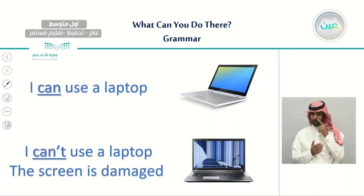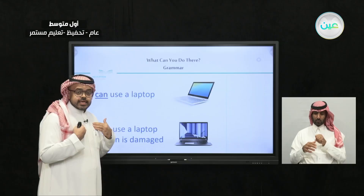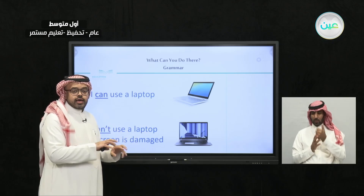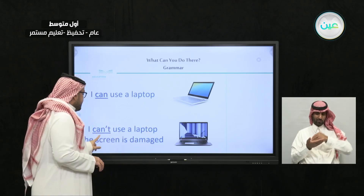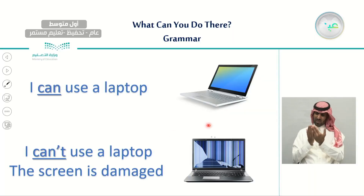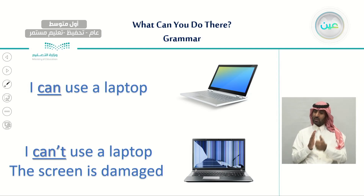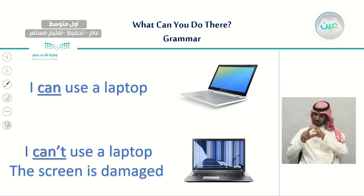Here are some examples of how to use CAN and CAN'T in a sentence. Looking at the first picture, we have a nice laptop and we can say: I can use a laptop, I can turn it on, I can write on it. But with a damaged laptop, I can't use it because the screen is damaged, so I cannot use it.